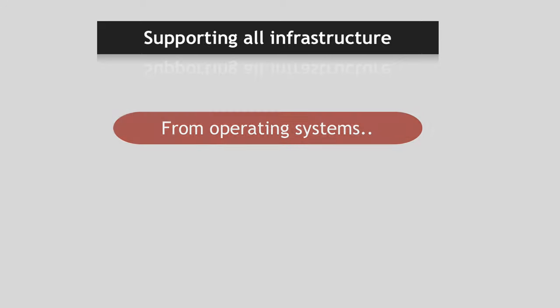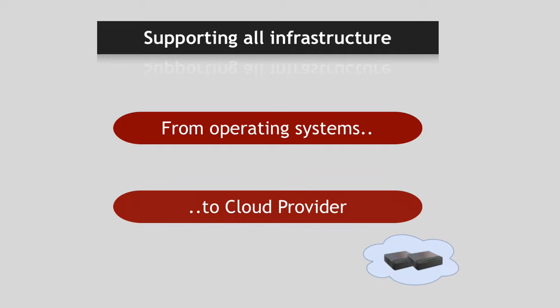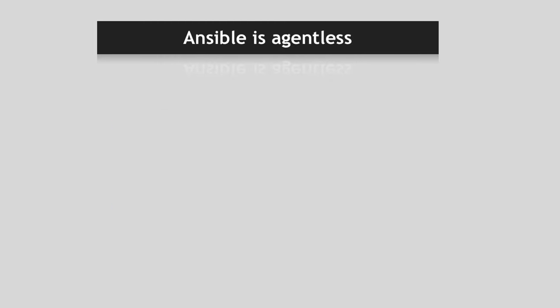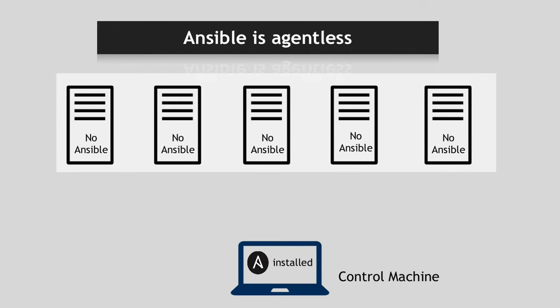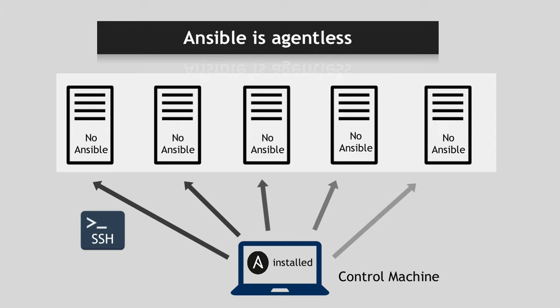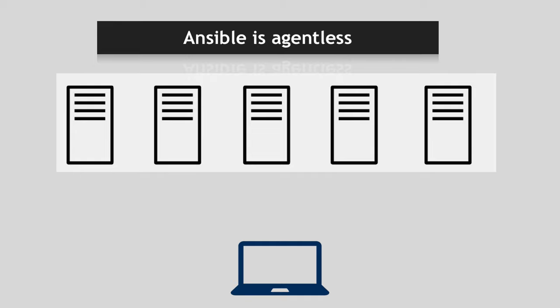Right now, whatever IT or system administration tasks you can imagine — from OS level updates to cloud provisioning — you can do all of them with Ansible, because it supports all operating systems, many different cloud providers, virtual cloud servers, and bare metal infrastructure. The only thing you need to execute Ansible files on target servers from your control machine is simple SSH access to the target servers. And that's one of the unique advantages of Ansible: it is agentless.